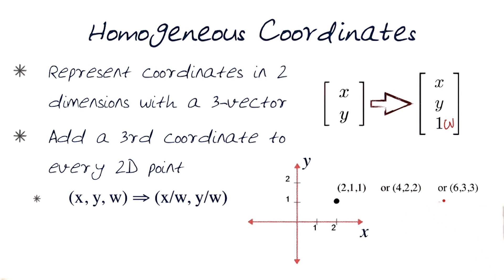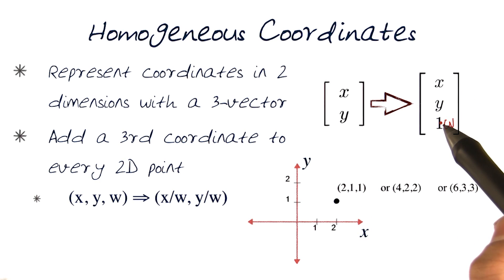And if I make w be three, six, three, three applies. So this point can now be represented by this three-vector in all three of these ways.